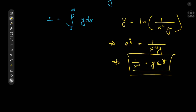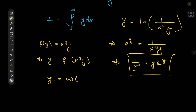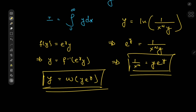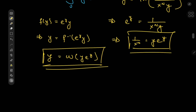So, what is that function? Just a really quick recap. If we define a function f(y) as e^y times y, then y equals the inverse function of e^y times y. This inverse function is called the Lambert W function, which we write as W. So y equals Lambert W of (y times e^y). And in our case, we have y times e^y equal to 1/x^n, which implies that y equals Lambert W of 1/x^n.